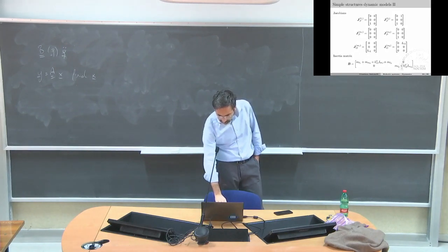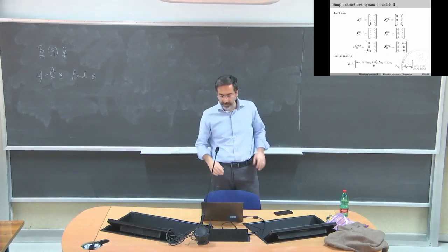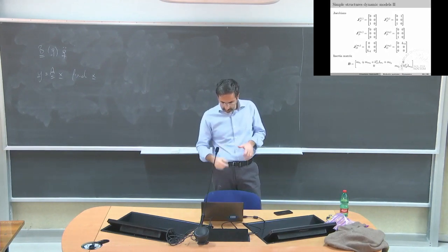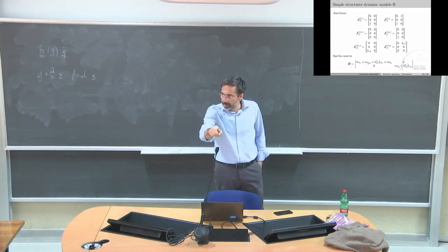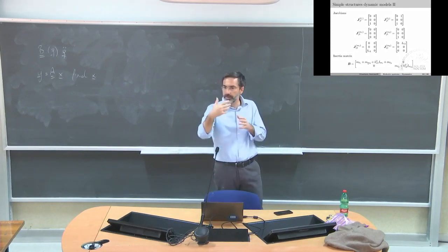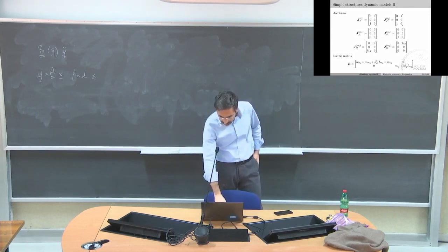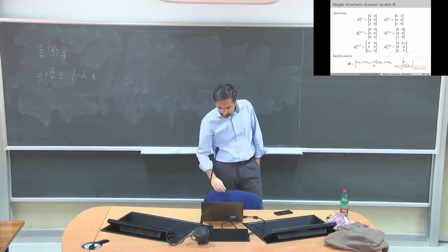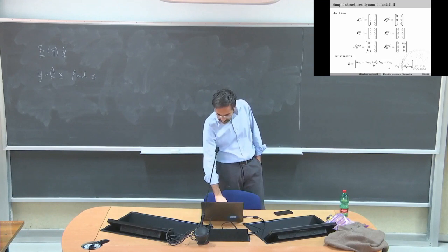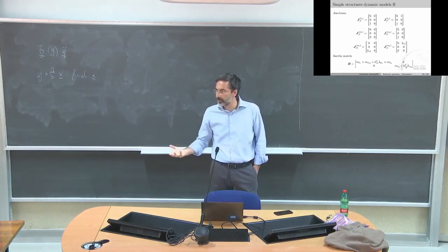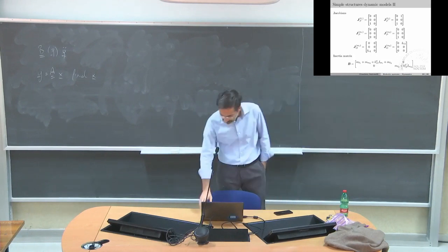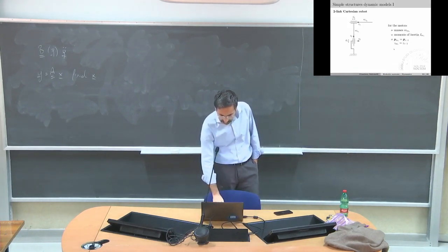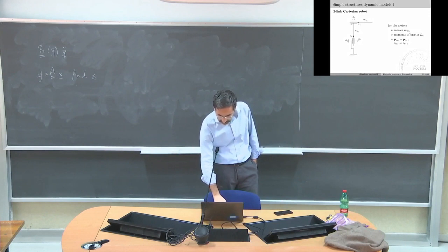The first motor sees the two masses, then the mass of the second motor because it is below the first link, and then the inertia of the first motor. The second sees only the second. It is not affected by the inertia of the first one because this is where the second is.